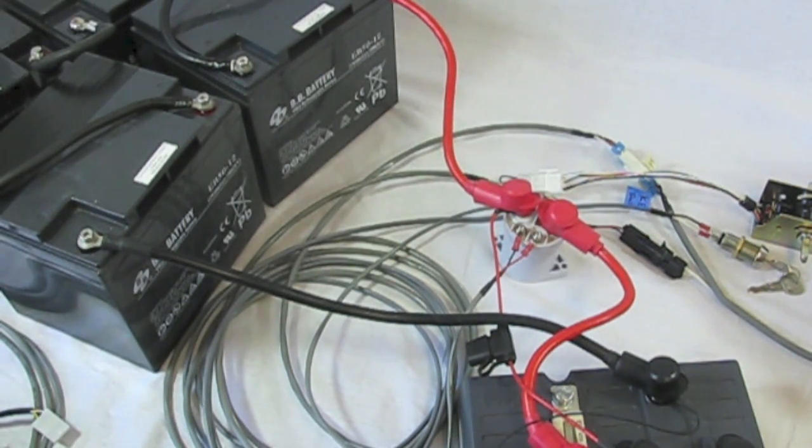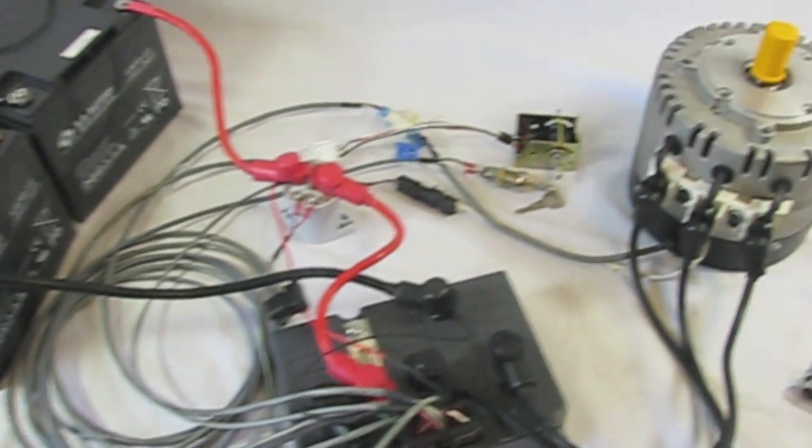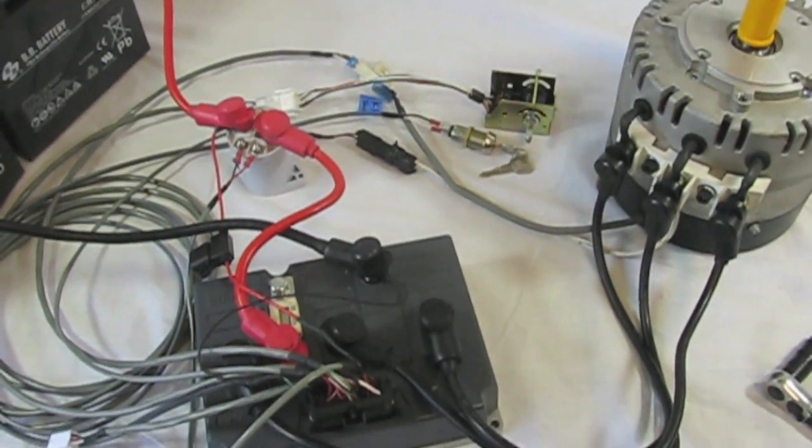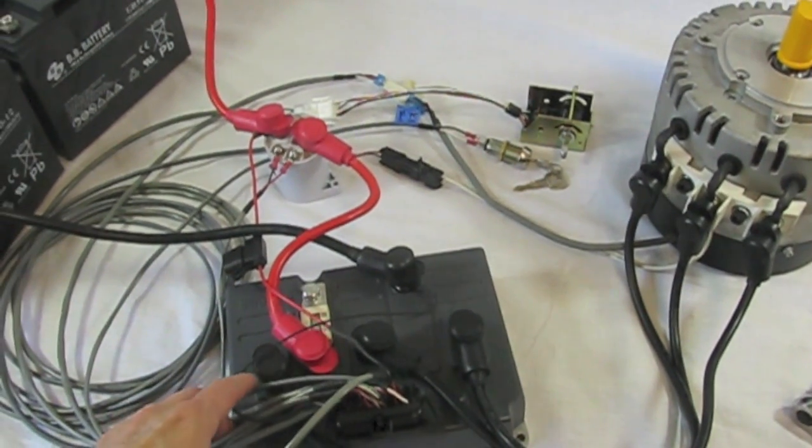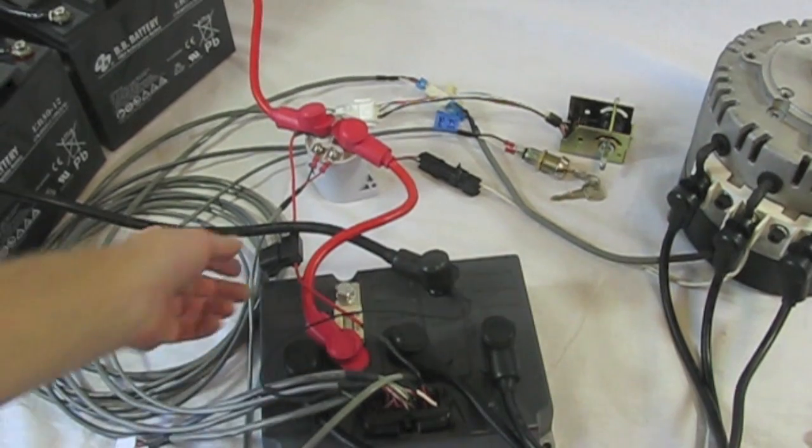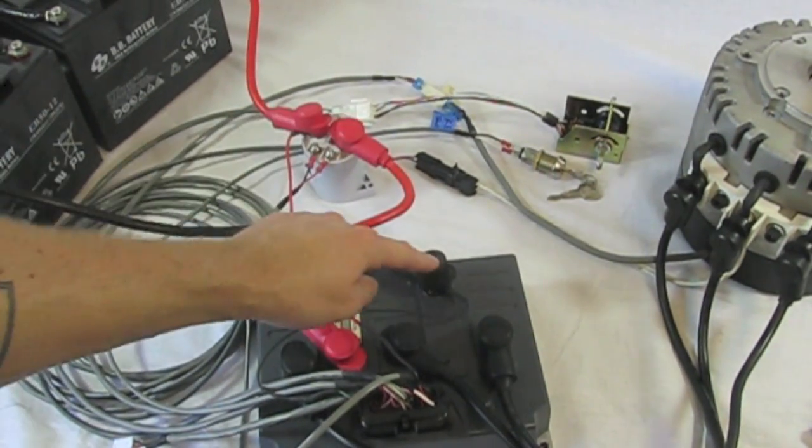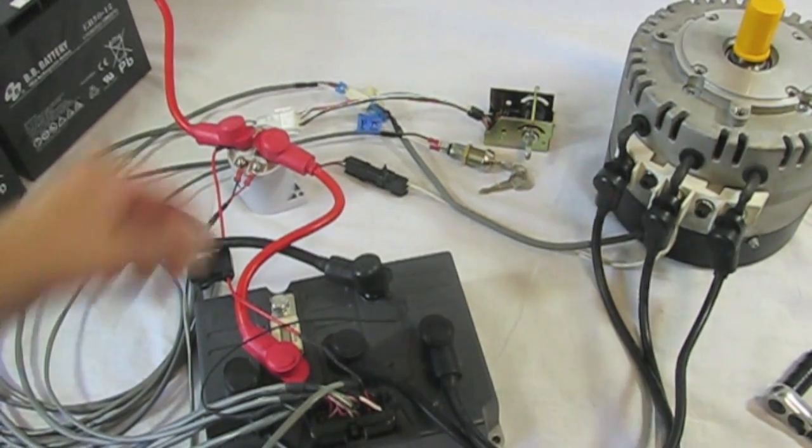Before I fire it up I'm going to do a quick once over making sure that all my connections are tight, making sure that the most negative side of my battery pack is going to the B minus on the controller and that the most positive is going to the contactor the side with the 3 amp fused wire on it and making sure everything looks good.